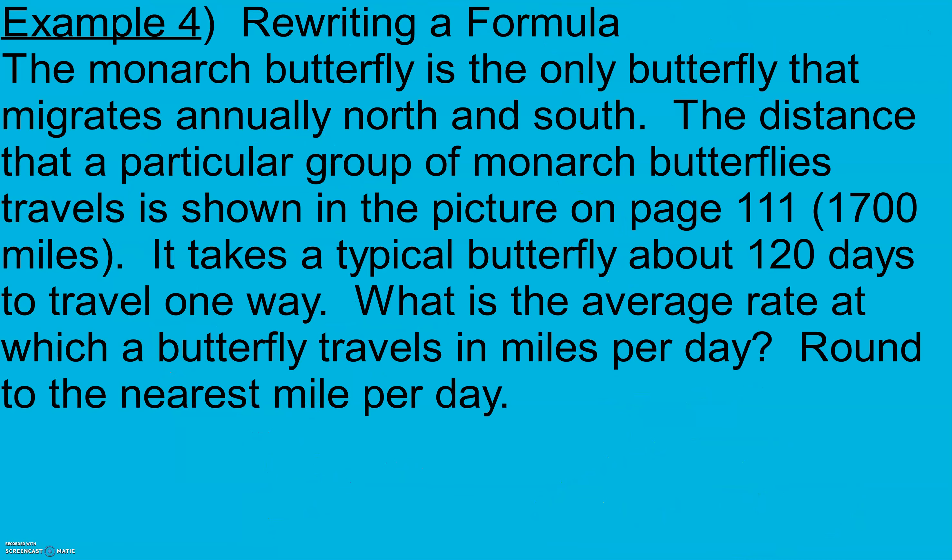Example 4 here. The monarch butterfly is the only butterfly that migrates annually north and south. The distance that a particular group of monarch butterflies travels is shown in the picture on page 111, 1700 miles. It takes a typical butterfly about 120 days to travel one way. What is the average rate at which a butterfly travels in miles per day?